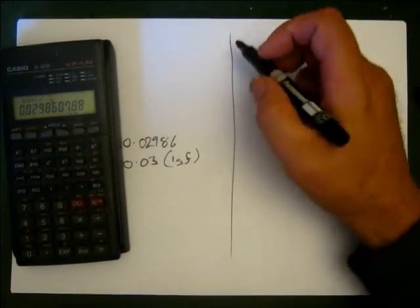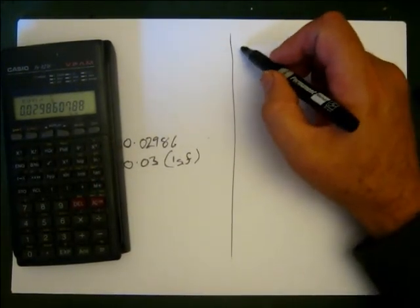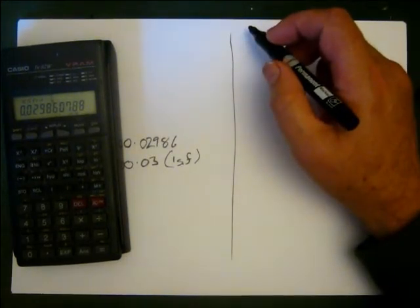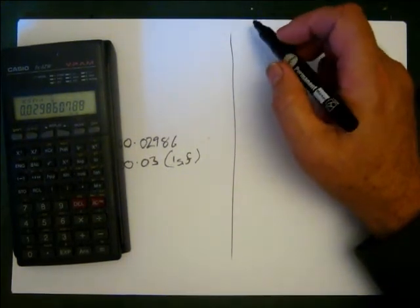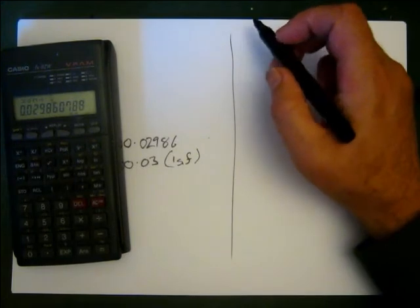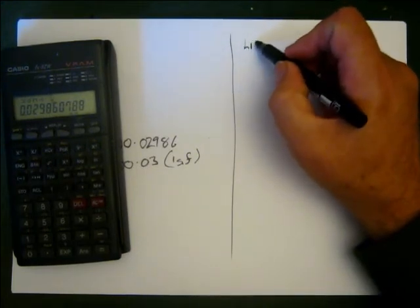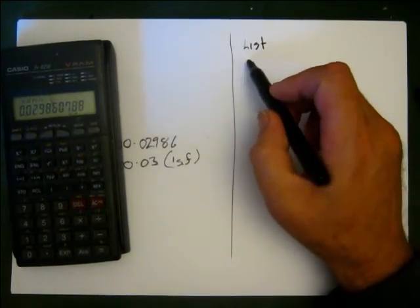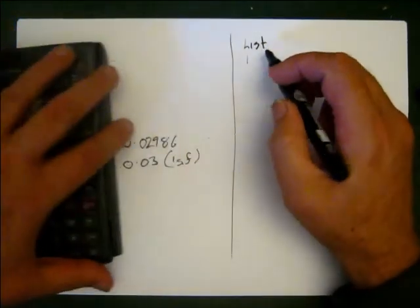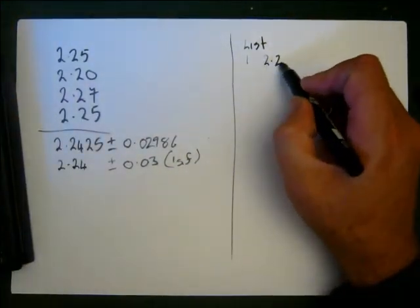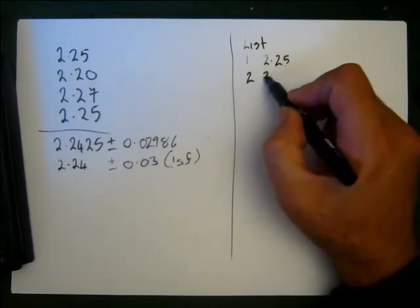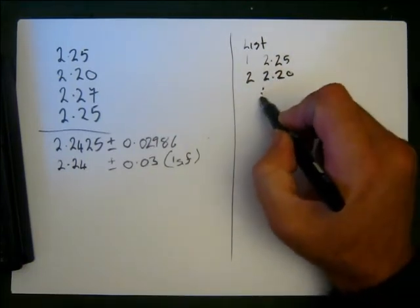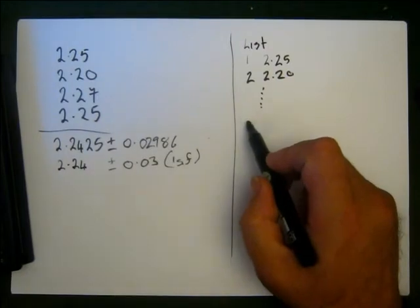graphing calculators. So what you'll do in that graphing calculator, like in FX I've got what other 950 or 75 or whatever, is you'll set up, you'll go to a list, and then you'll enter in your data 1, 2.25, 2 will be 2.20, dot dot dot. And then when you get down to the bottom